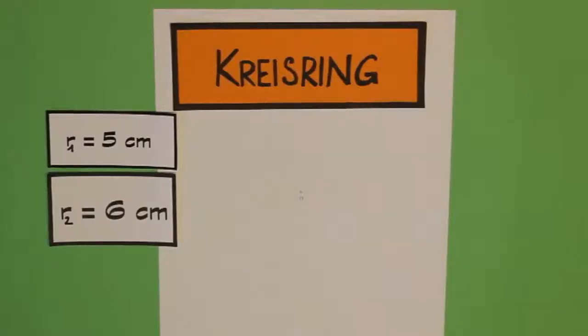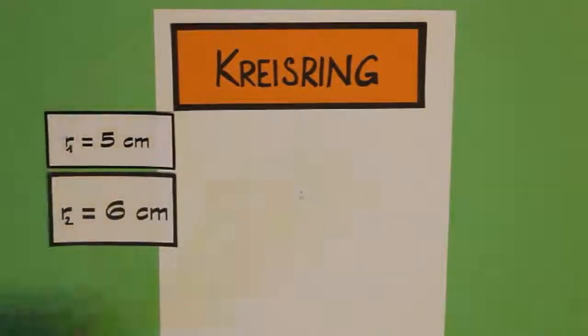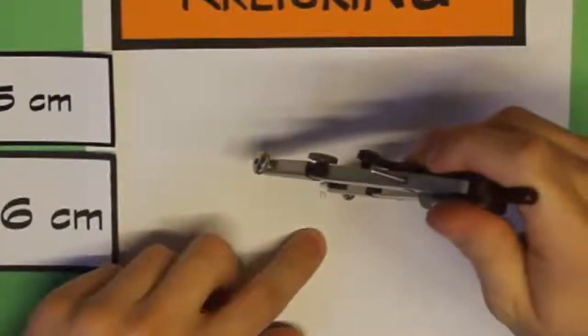So, jetzt nehmen wir den kürzeren Radius mit 5 cm in den Zirkel. Das ist für euch eh schon kein Problem mehr. Wir stechen in den Mittelpunkt ein und wir zeichnen den Kreis.